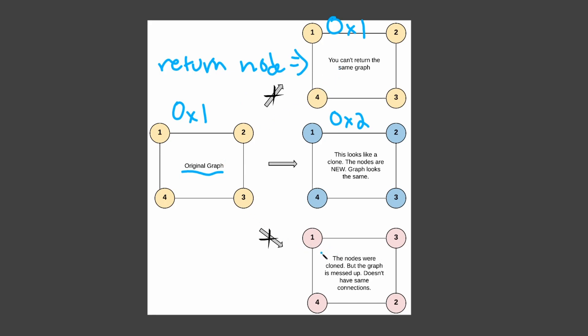A problem with the incorrect return is that the nodes are in the wrong order. As you can see, here we go 1, 2, 3, 4 — but for that one we go 1, 3, 2, 4. That's clearly not correct.